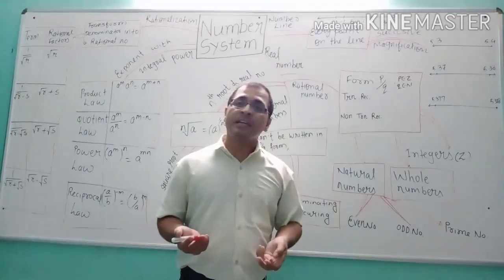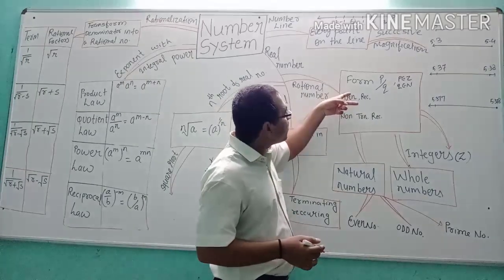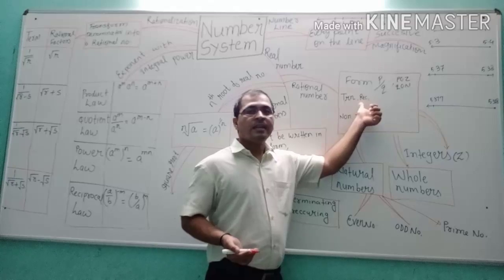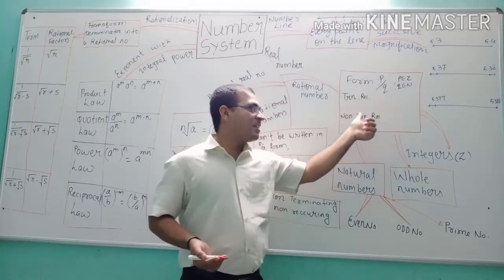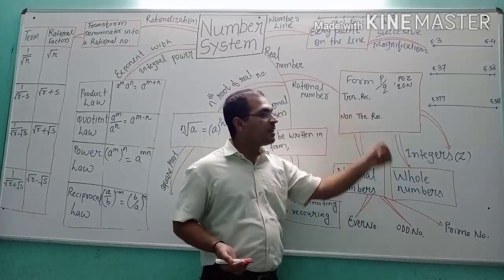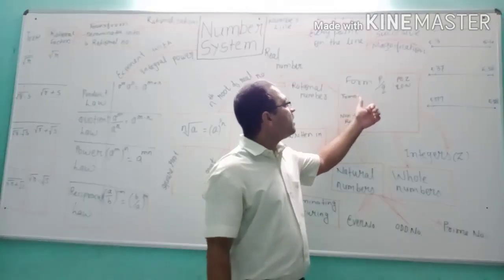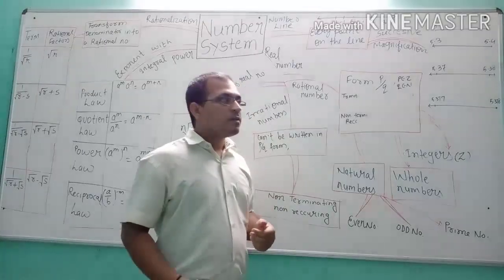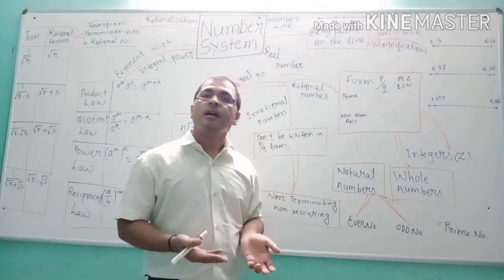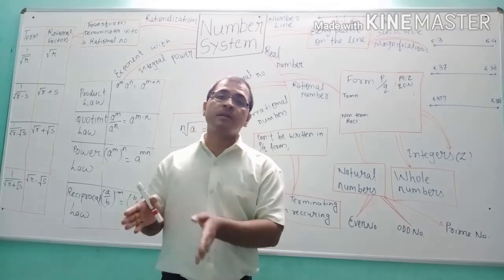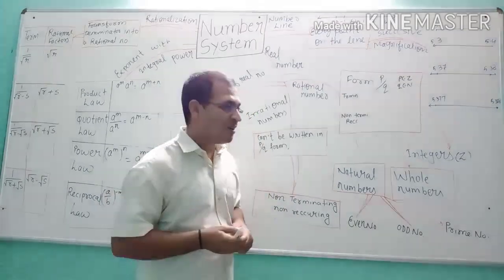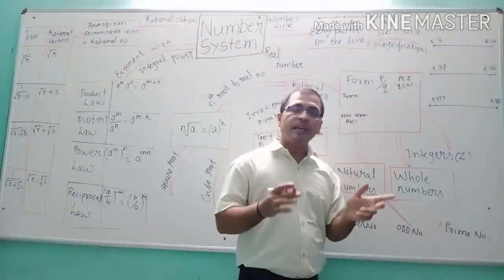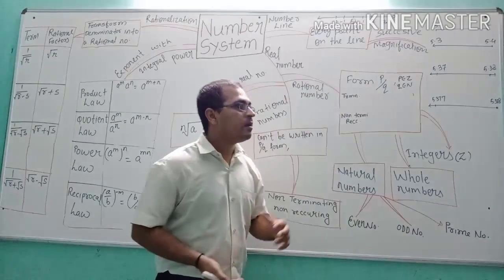Rational numbers which can be written in p by q form are again divided into two categories: terminating recurring decimal expressions and non-terminating recurring decimal expressions. There are also many numbers not obviously in p by q form, but when you divide p by q you get a number in decimal form.